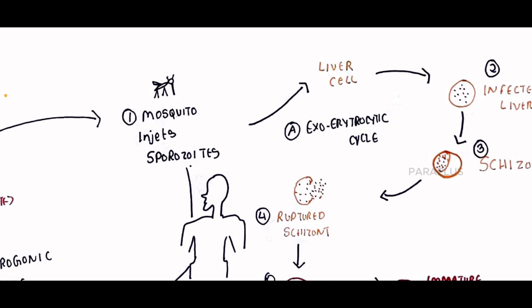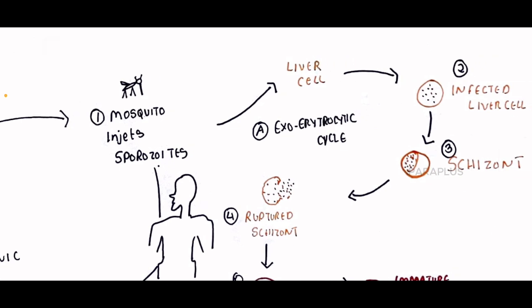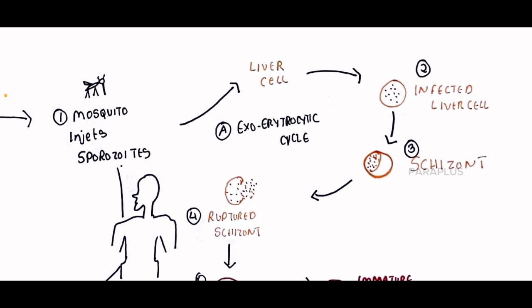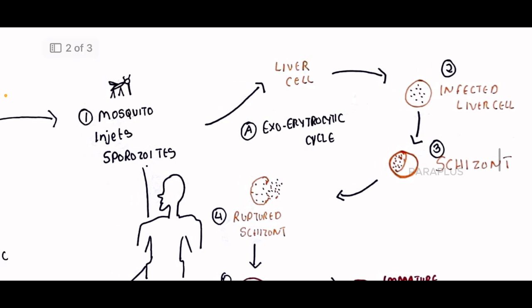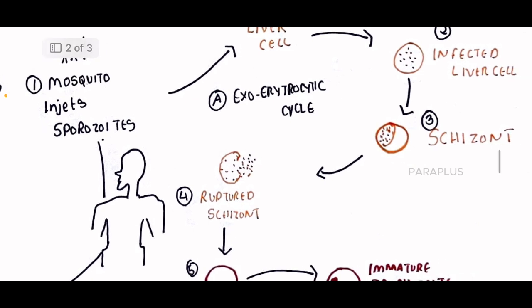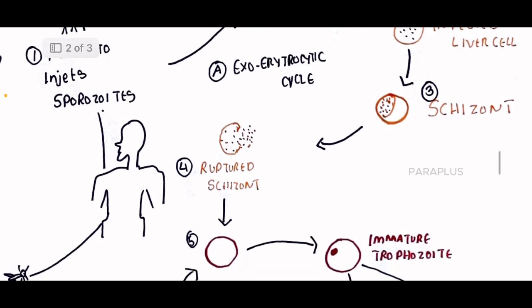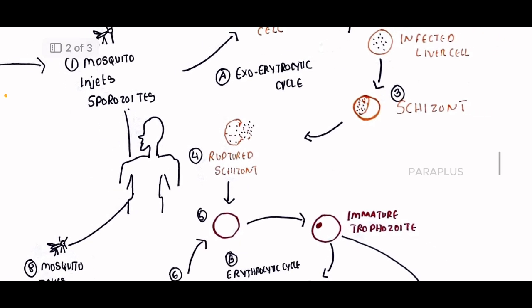The sporozoites travel to the liver cells and infect them. Inside the liver cells, the parasite develops. The schizonts are formed as the parasite multiplies. This causes rupture of the liver cells, releasing merozoites into the blood.